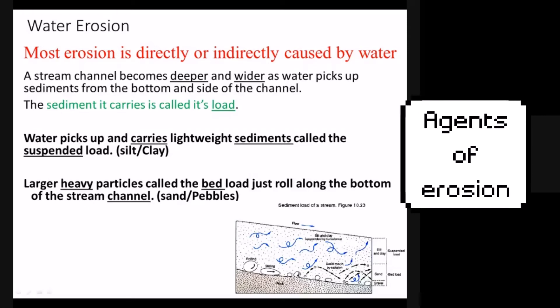In this video, we're going to talk about erosion and the types of erosion that occur on earth. Most erosion on earth is directly or indirectly caused by water. That includes rain and rivers. When rivers pick up sediment and carry it along with them, it's called load.